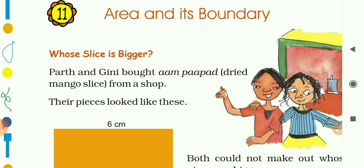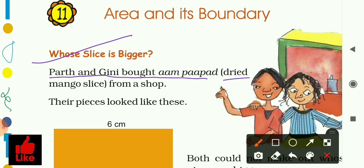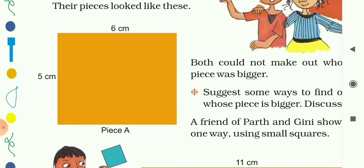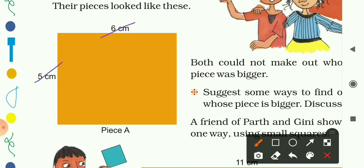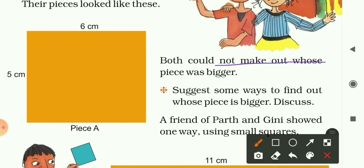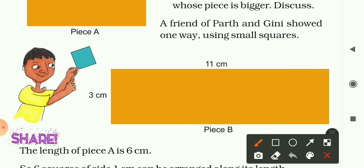Now let's come to the topic: whose slice is bigger? Parth and Guinea bought aam papad — dried mango slices — from a shop. Their pieces looked like this. The first piece, Piece A, has dimensions 6 cm by 5 cm. Both could not make out whose piece was bigger, so suggest some ways to find out and discuss. Here is Piece B with dimensions 11 cm by 3 cm.